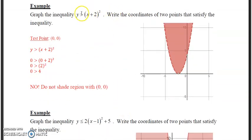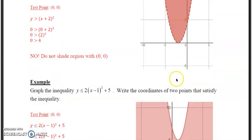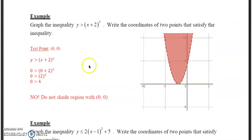It says graph the inequality y is greater than or equal to (x + 2) squared, write the coordinates of two points that satisfy this inequality. So I do the test point, shade the region. So to answer the question, you would just pick any two coordinates that are inside here. So just basically do just a couple of more test points. That's all. I didn't do that, I do apologize.